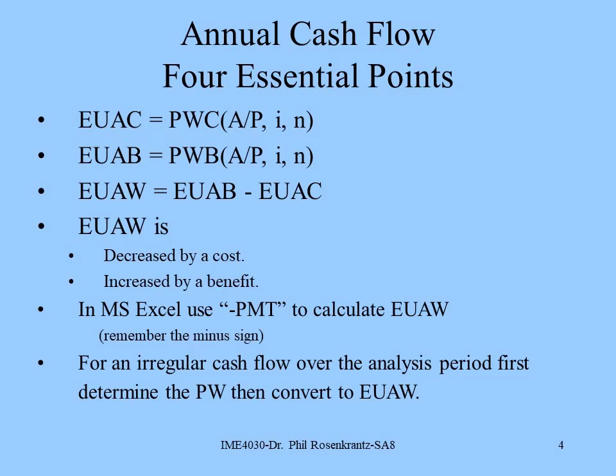On slide number four, we can see that the equivalent uniform annual cost has an equivalent to the present worth of cost by multiplying by the A/P factor. Similarly, to find the equivalent uniform annual benefit from a present worth of benefits, we multiply by the A/P factor as well. The equivalent uniform annual worth equals equivalent uniform annual benefits minus equivalent uniform annual cost. In Excel, you would use the PMT function.